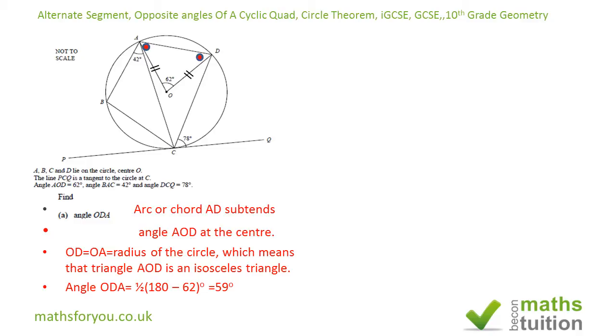For part B, we're asked to find angle ACD, which is this one here. Now we know that the chord AD subtends an angle of 62 at the center. The same chord subtends an angle at the circumference, and that should be half of the angle at the center.